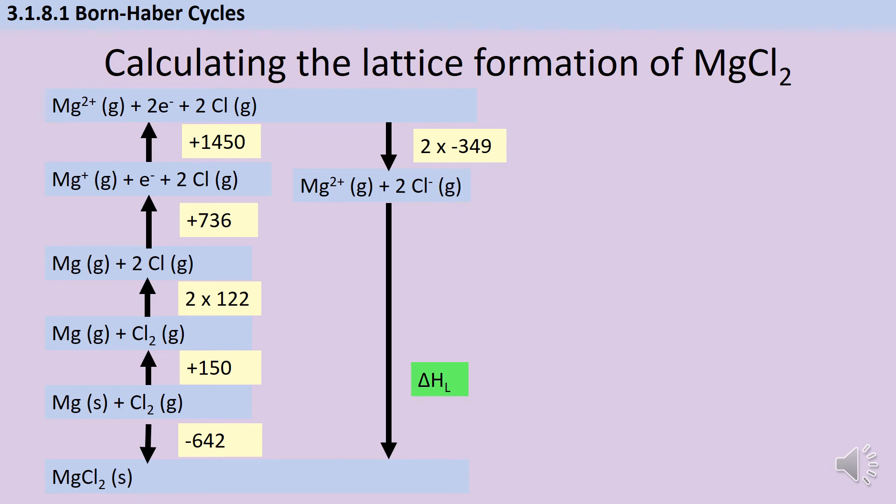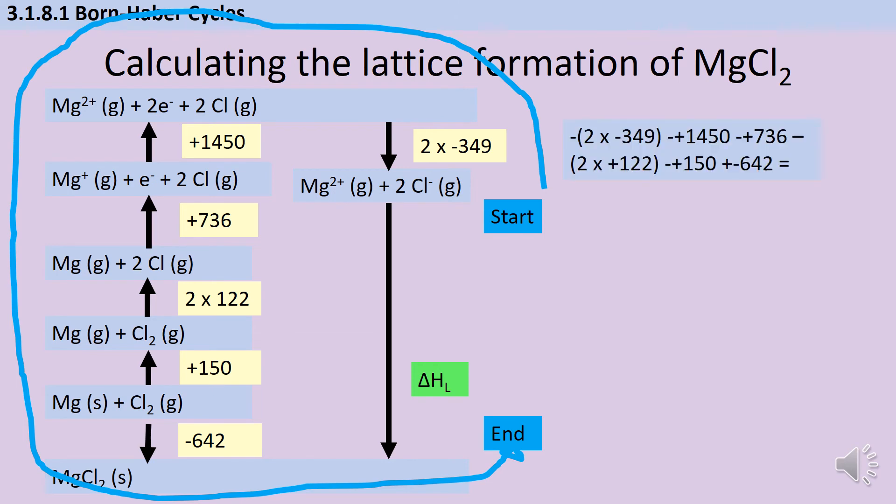So again, before I complete my calculation, I'm going to write start, end, and draw myself a nice big arrow to make sure I go the right way around this cycle. If I add up all the different parts of that cycle, then I'm left with a formation value of minus 2,524 kilojoules per mole. And if I think about it, it does make sense that that is a larger number, because we've got the bigger charge on the magnesium ion.